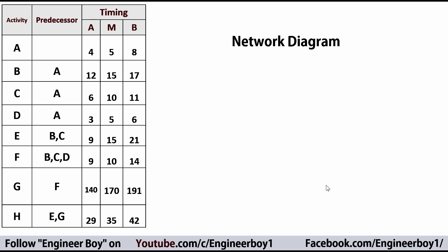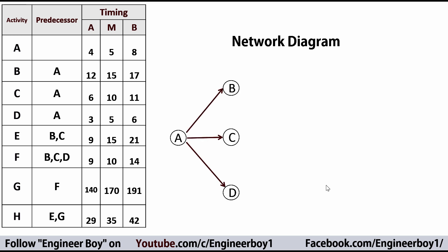In the network diagram, activity A is just the start of the project — it is the predecessor for B, C, and D. So once activity A completes, B, C, and D start. Then B and C are predecessors for E, and B, C, D are predecessors for F.